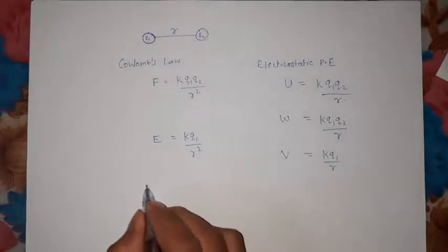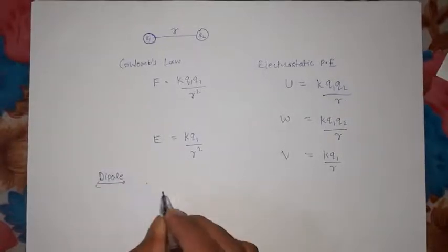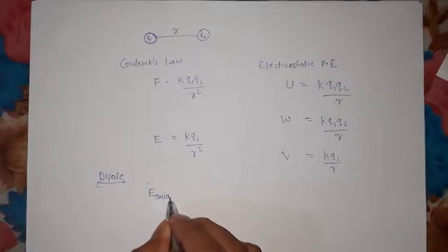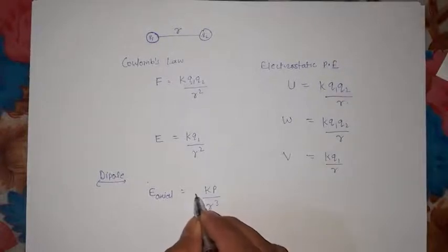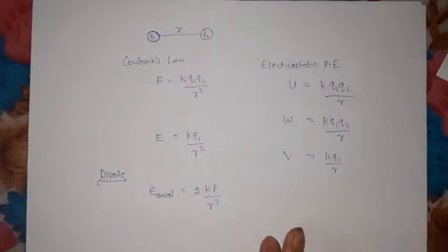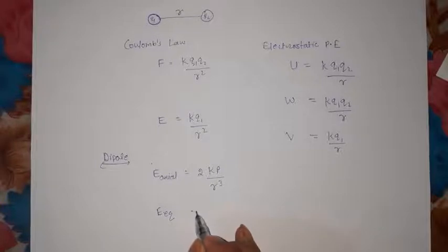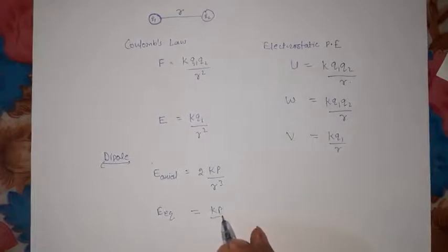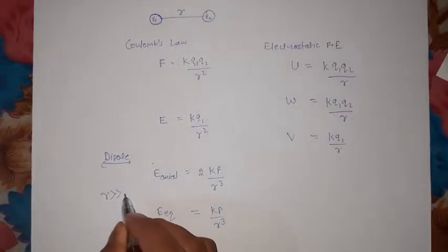Now student, if you have a dipole at the equatorial position, what is the electric field? You don't have to do much. If you add this factor of 2, then the formula will be E = kP/r³, where P is the dipole moment. But this is when r is very much greater than the dipole length L.